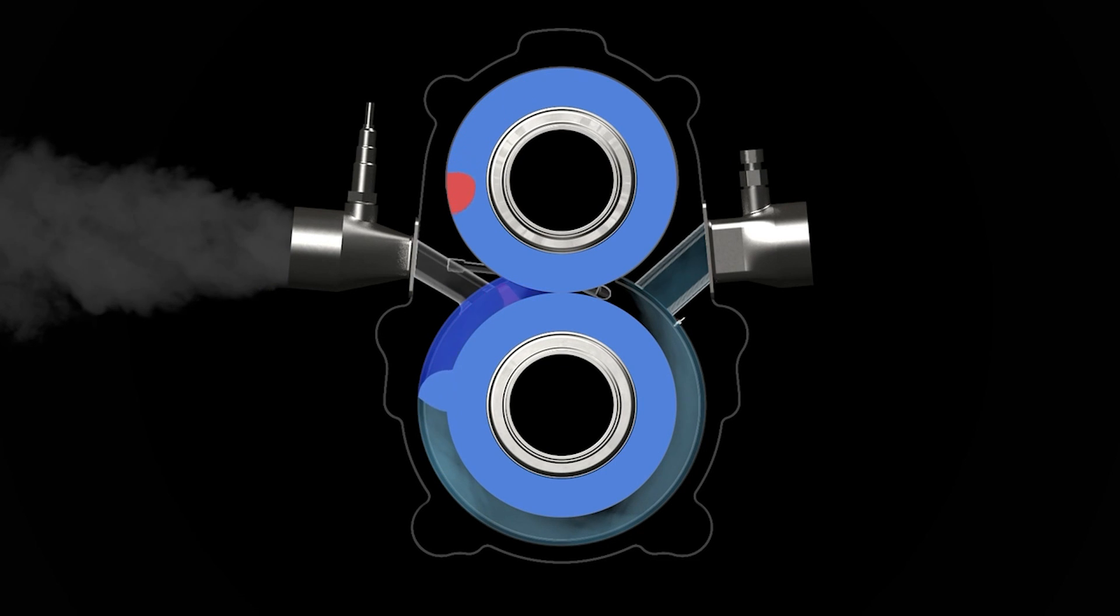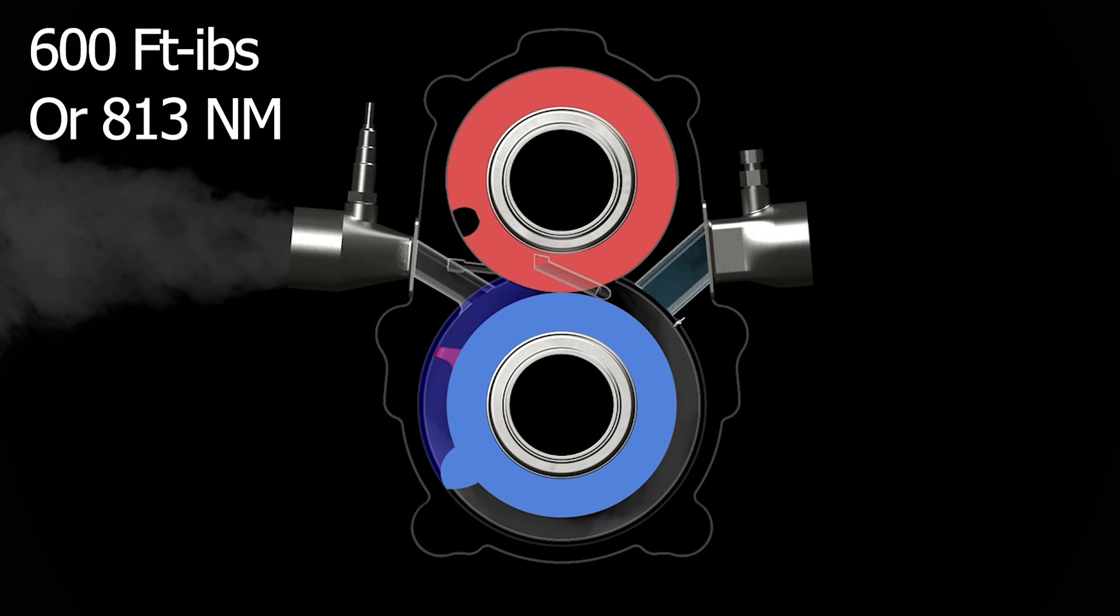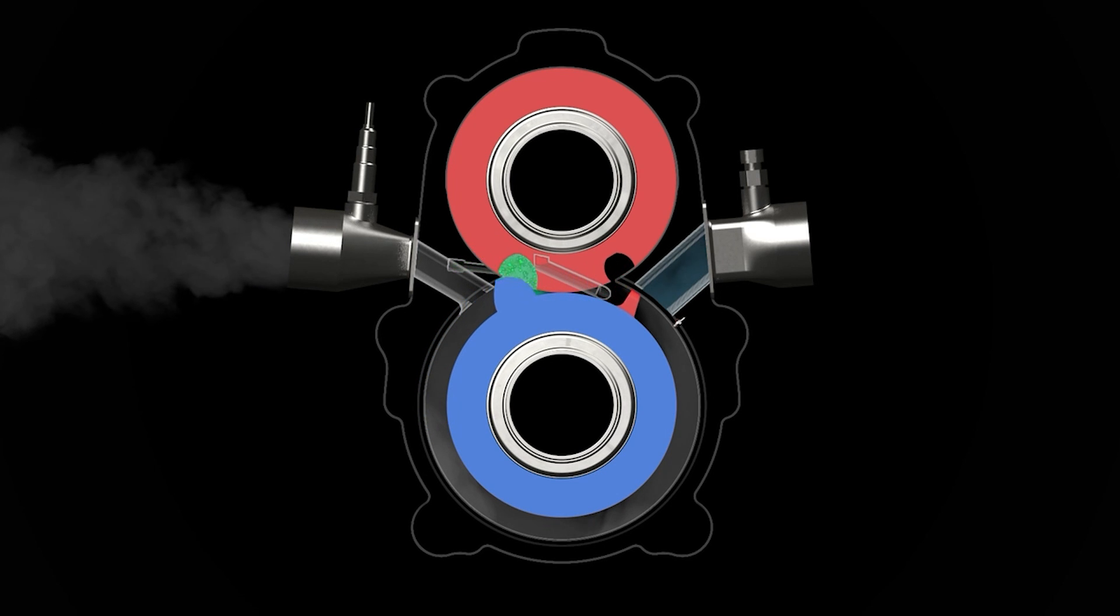But how about torque? In the video I made about the Omega-1 I got tons of comments stating that the engine won't make any torque. Well according to Astron Aerospace this engine will produce 600 foot pounds of torque or just over 800 newton meters and they said those numbers are conservative. So that's pretty impressive.